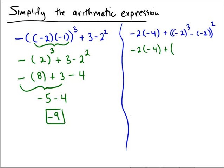And inside of this parentheses I'm going to do the negative 2 cubed, which would be negative 2 times negative 2, 4, times negative 2, which would be negative 8 minus negative 2 quantity squared.